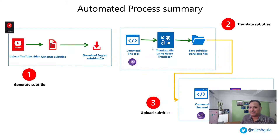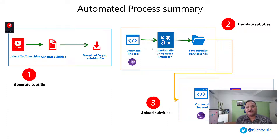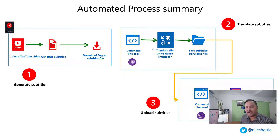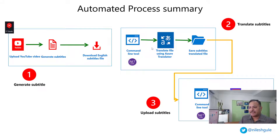This is the summary of the whole automation process. In the first step we generate and download the subtitles — this step is unchanged in both the manual and automated workflows; we still need the original language subtitle, which in my case is English. The process of translating and uploading has been automated using two command-line utilities, both developed in .NET Core. The first one translates all the subtitles into the configured languages, and the second uploads them using the YouTube Data API.